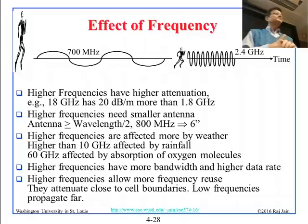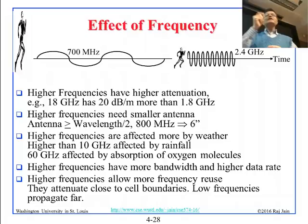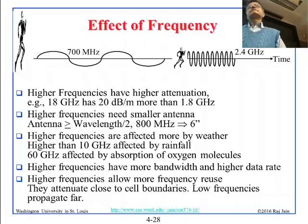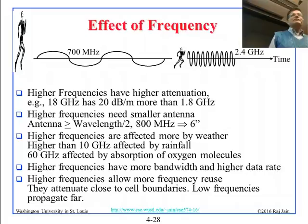Now, the effect of frequency: every signal has a frequency and a wavelength — they are related. Low frequency means large wavelength. Think of it this way: low frequency is like a very tall person — it can go very far, up to 45 miles. High frequencies have smaller wavelengths; they cannot go 45 miles, sometimes not even 100 meters.